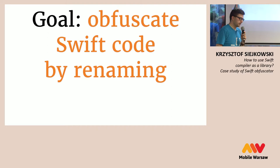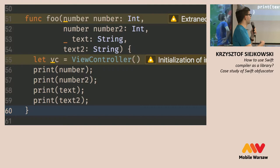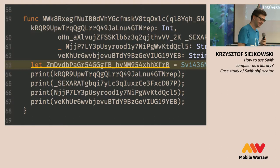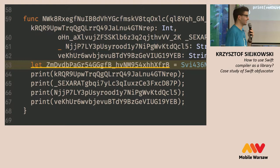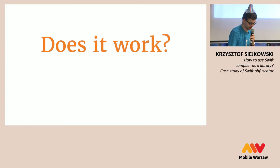The goal for our first version was to perform Swift code obfuscation by renaming — changing the code from something readable into something with long random strings. The important part, as you can imagine, is that it should still compile afterwards. So you're not just putting random strings anywhere — the result has to compile. Let me quickly show it in action, or at least the results of it.